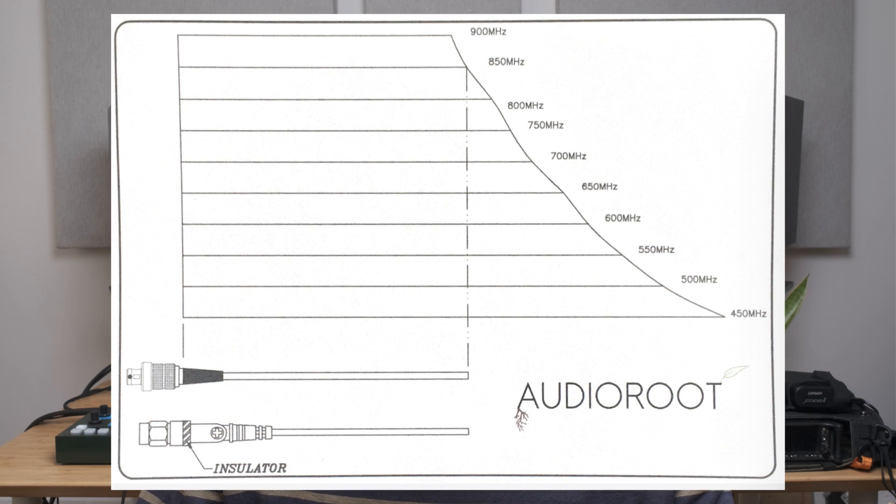Any sound mixer who operates out of a bag will be accustomed to the good old whip antenna — those flexible little metal rods that stick out of receivers and transmitters. Oftentimes these are all it takes to get the job done. A whip antenna is a single quarter wavelength antenna that requires a ground plane in order to operate. An example of a ground plane would be the chassis of a receiver or the body of a transmitter. Whips perform their best when trimmed to the proper length relative to the frequency they are receiving.